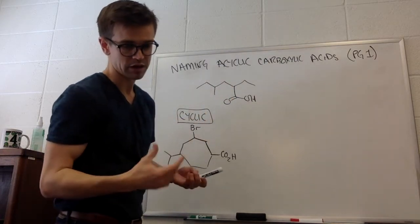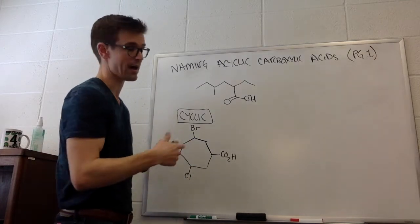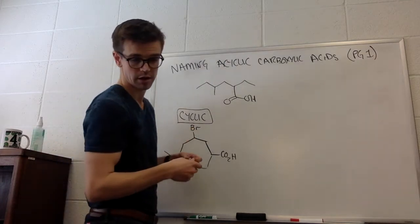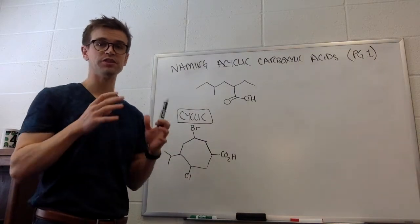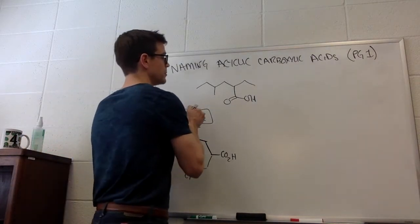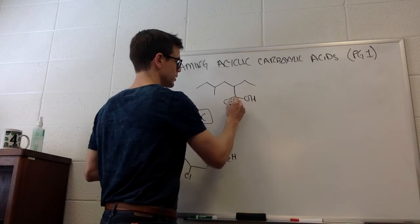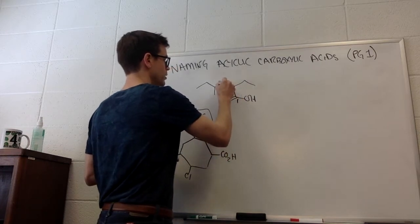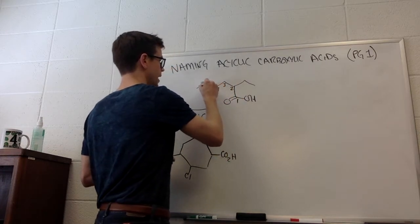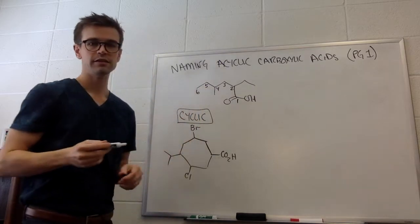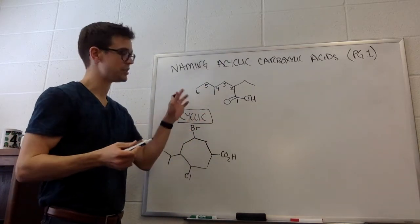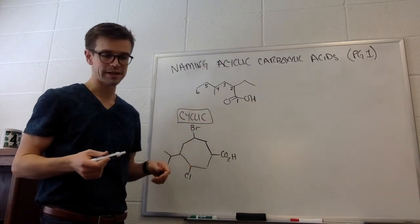And we number, this is point A of that document, we number the carboxylic acid as position one. So this is going to be position one, and then carbon two, three, four, five, and six. So our longest chain is six carbons long, so that's hexane.